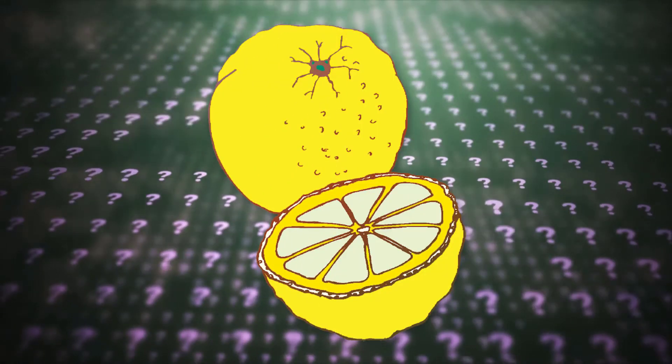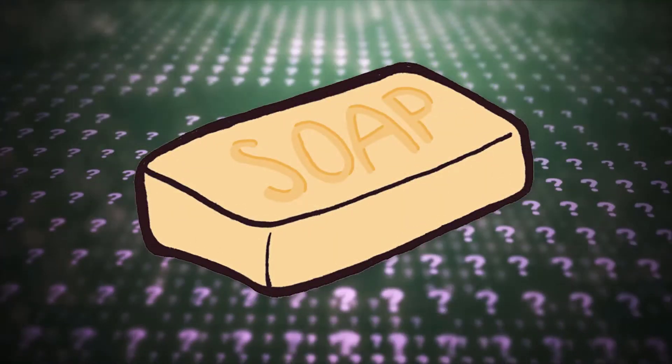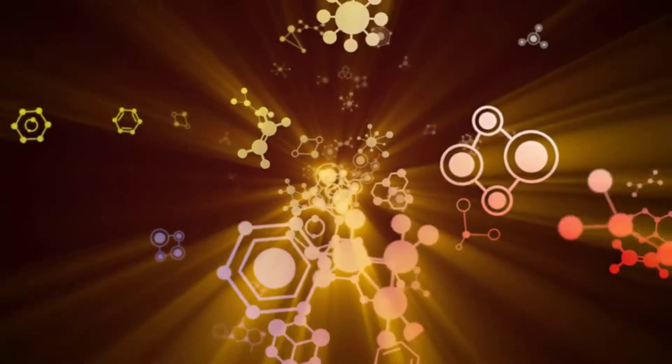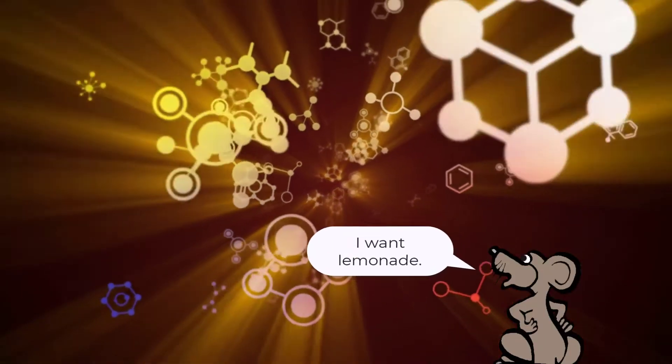Why are lemons sour? Why is soap slippery? Lemons and soap are different. Lemons and soap are made of different kinds of molecules.